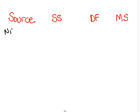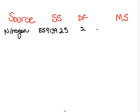The first one we are going to look at is nitrogen, and the sums of squares of that was 559139.25. The degrees of freedom was 2, so the mean square is 279569.625.